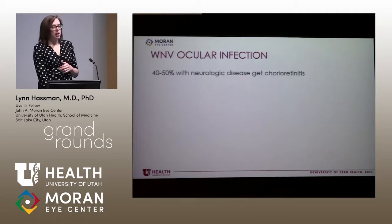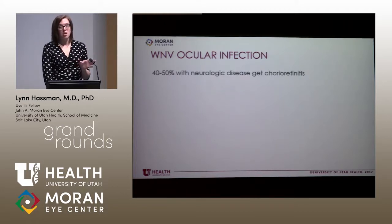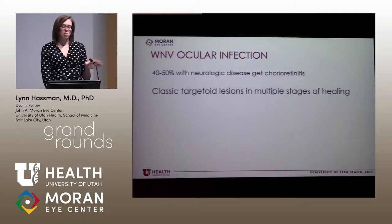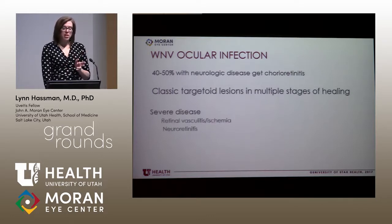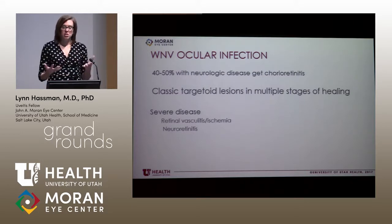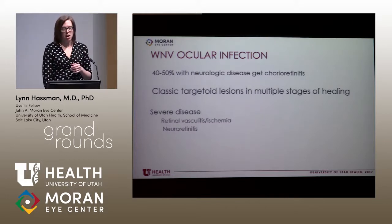In the eye, 40 to 50 percent of patients with neurologic disease develop chorioretinitis. We see classic targetoid lesions in multiple stages of healing, which is typical for West Nile virus. In more severe cases, we can see retinal vasculitis and ischemia, including intraretinal hemorrhages, vasculitis, and even neuroretinitis.